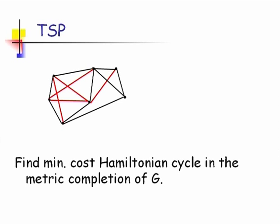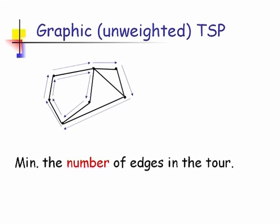You can also view it as a Hamiltonian cycle in the metric closure of the graph, and then you can impose the requirement that every vertex is visited exactly once. I add those edges which are not there to make the graph complete, and the lengths of those edges are just the length of the shortest path between the endpoints. Then this can be your tour, and if I replace those red edges by the shortest paths, I would get the same tours shown earlier.